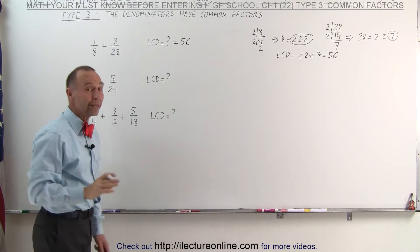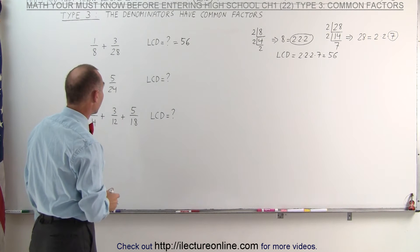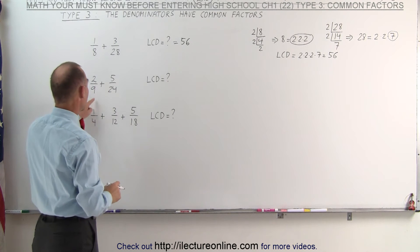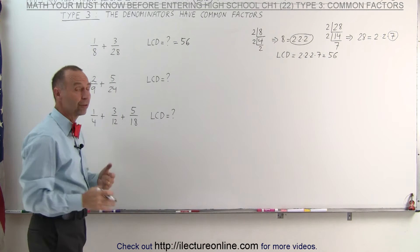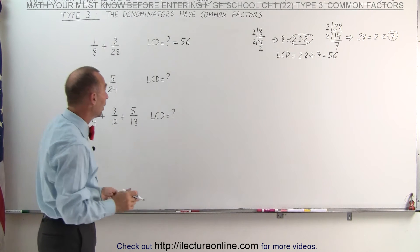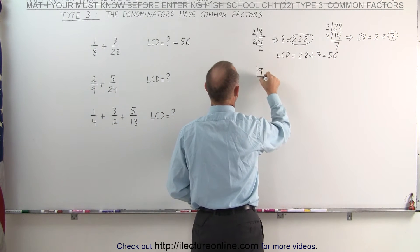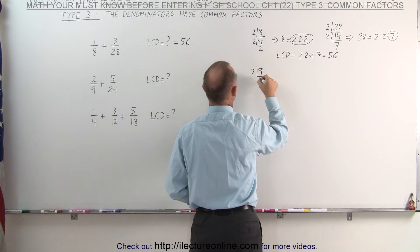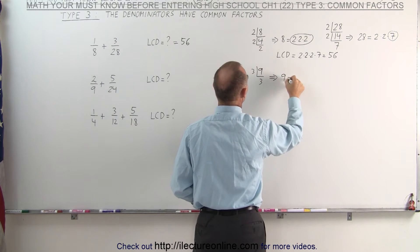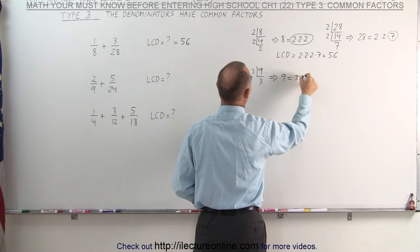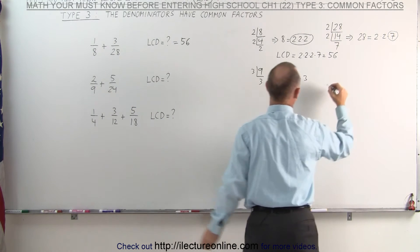Alright, if you didn't quite get that, we'll do it again. After a couple of examples, you'll probably catch on. Here we have 2 denominators; we're going to write those as a product of their factors as well. We take the number 9, we divide it by 3, which gives us 3, which means that 9 can be written as 3 times 3.